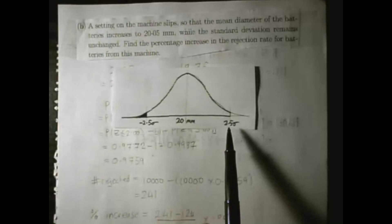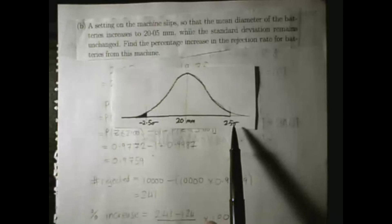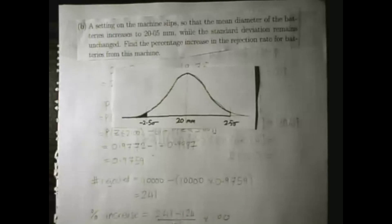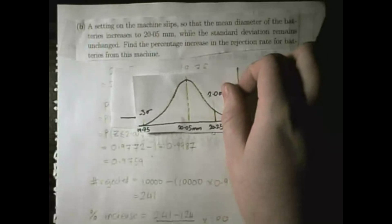20.25mm was over here 2.5 standard deviations away, and the 19.75 was 2.5 standard deviations away in the other direction. This time though, we have a slightly different scenario.